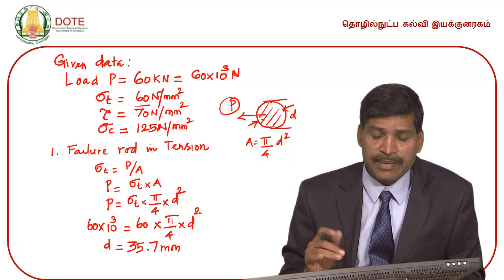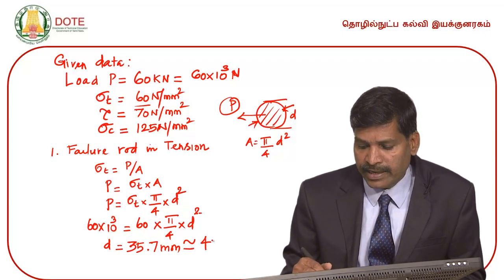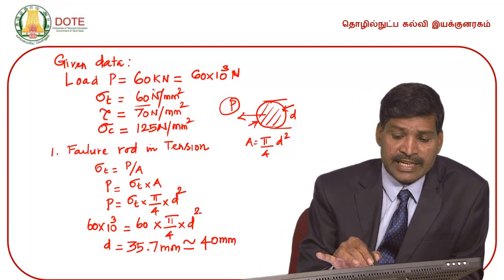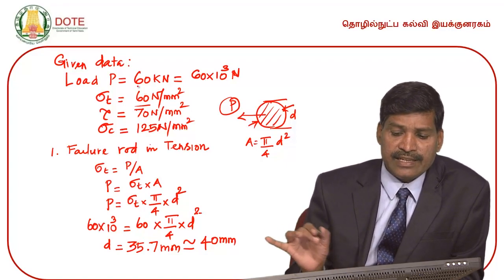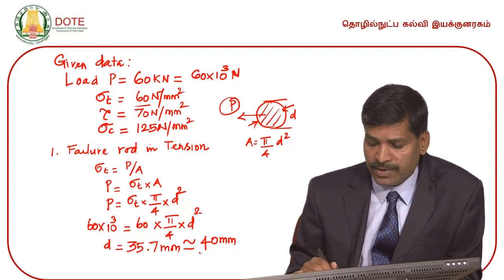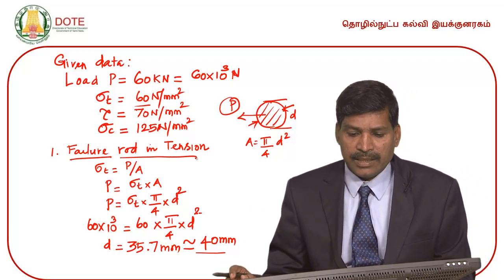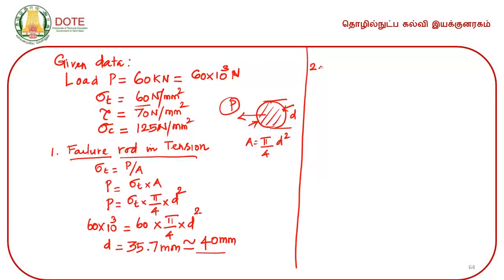The nearest standard diameter is found. In the 60 kilonewton load with tensile stress of 60 N/mm², the diameter of the shaft is calculated as 40 mm, based on failure of rod in tension. This gives us the diameter of the shaft as 40 mm.